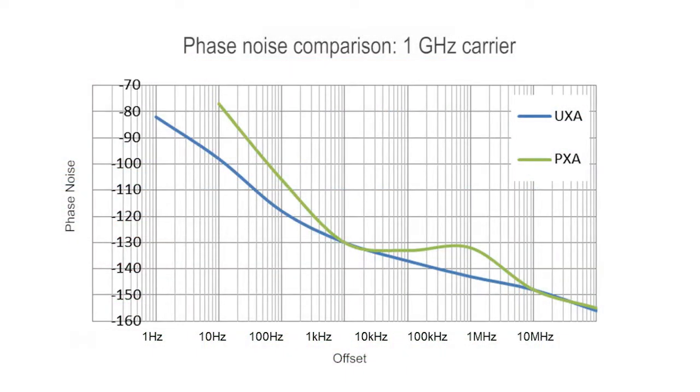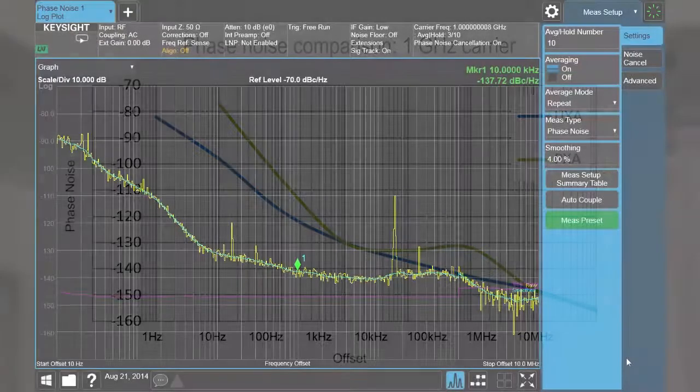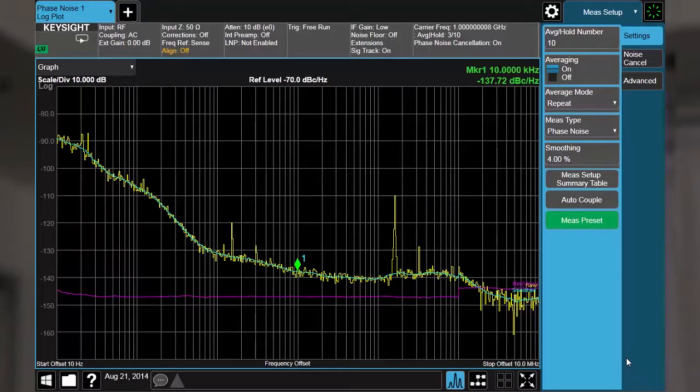The UXA has significantly improved the phase noise compared to our PXA signal analyzer. This is important if you are measuring an oscillator design or testing the latest OFDM standard. The use of a direct digital synthesis LO section, based on a Keysight proprietary DAC, improves phase noise while maintaining excellent spurious performance.